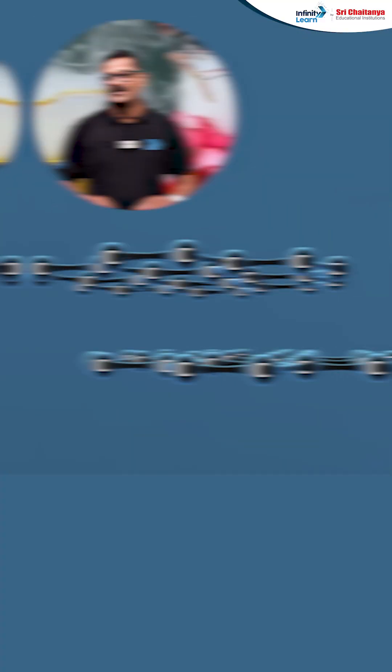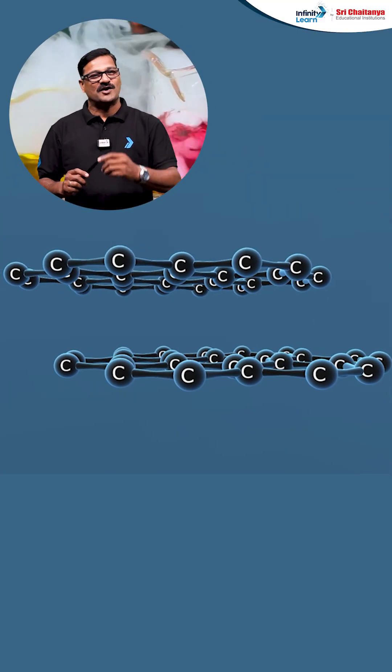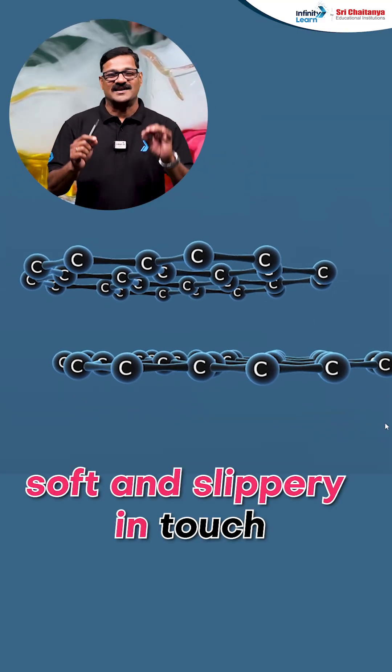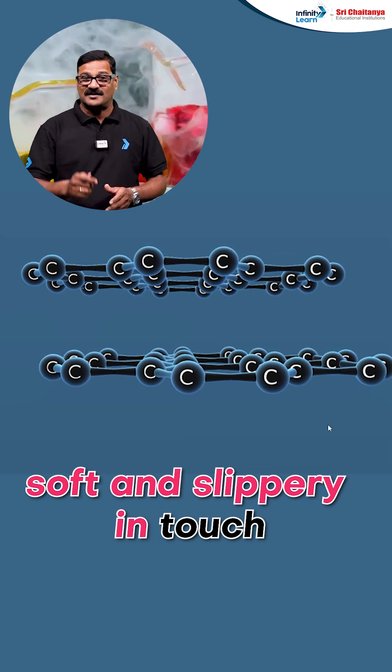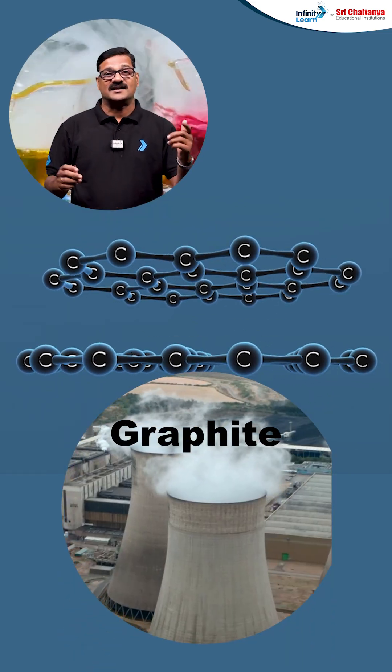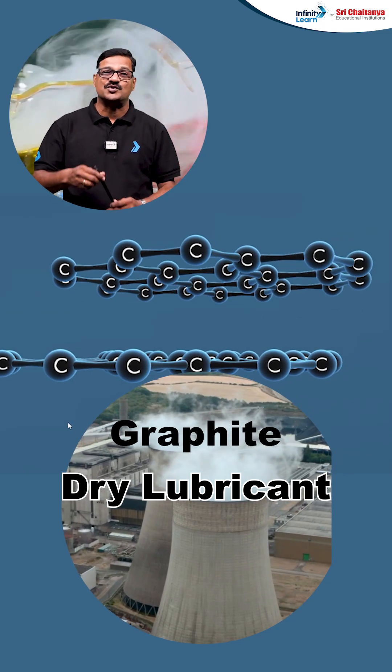This gives the conductance of the graphite as well as soft and slippery in touch. For that reason, graphite is used as a dry lubricant and also as a moderator to absorb the neutrons in nuclear reactors.